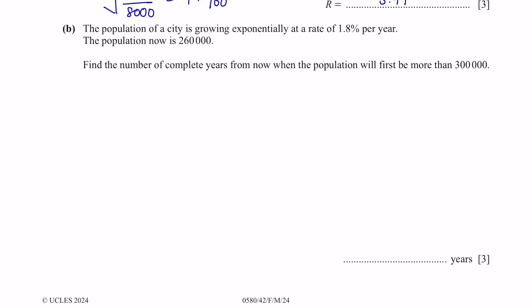Next, question B. The population of a city is growing exponentially at a rate of 1.8% per year. The population is now $260,000. Find the number of complete years from now when the population will first be more than $300,000. When calculating exponential growth, the formula is the same as compound interest. So we're looking to find the value of N here when this will give us more than $300,000. Let's first substitute P and R.